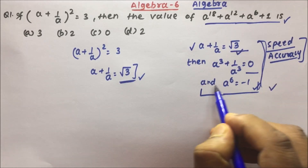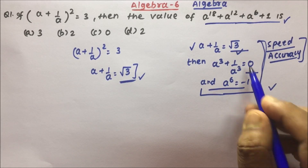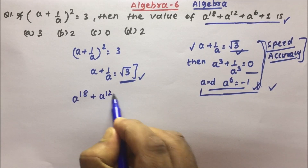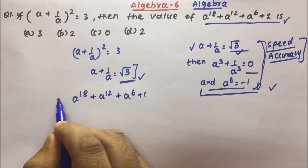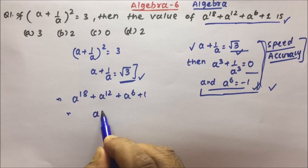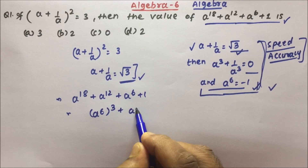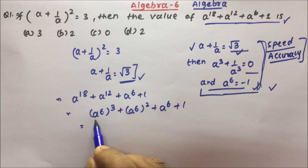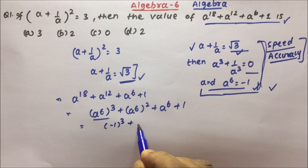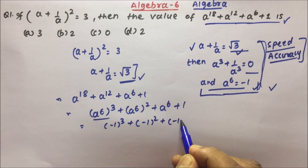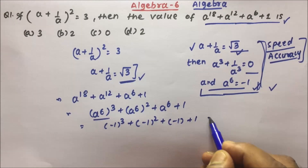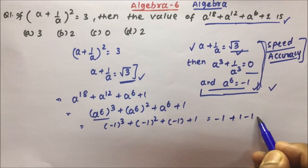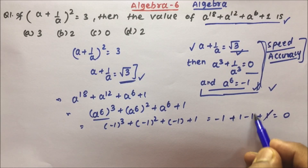Now, since a + 1/a = √3, we know that a⁶ = -1. Put this value into the expression. We can write a¹⁸ as (a⁶)³ and a¹² as (a⁶)². So the expression becomes: (-1)³ + (-1)² + (-1) + 1. That gives us: -1 + 1 + (-1) + 1, which equals 0.